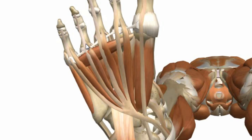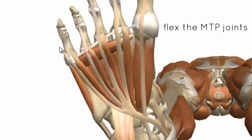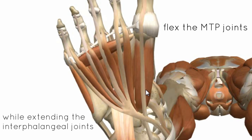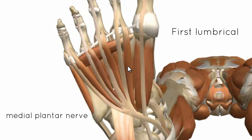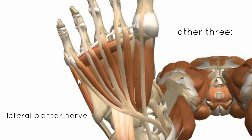The lumbricals insert onto the extensor hood of the lateral four digits. Because of their insertion onto the extensor expansions, they can flex the MTP joint while extending the interphalangeal joints. The first lumbrical is innervated by the medial plantar nerve, and the other three are innervated by the lateral plantar nerve.